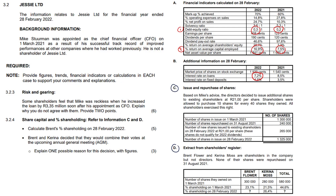Brent Flower and Karina Moss are shareholders in the company but not directors. None of their shares were repurchased on 31 August 2021. Brent owned 300,000 shares — his percentage shareholding was 23.1% at the start of the year. But what was it at the end of the year? We started with 300,000, we're going to factor in the new issue, and at year end the total company shareholding was 1,325,000.